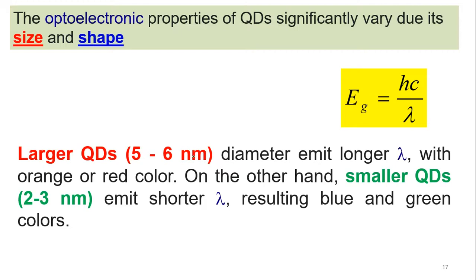Looking at the beauty of quantum dots: as explained, there are two properties — optical properties and electronic properties. When we combine these two, we call that optoelectronics. The electronic properties of quantum dots significantly vary due to size and shape.